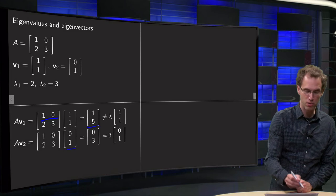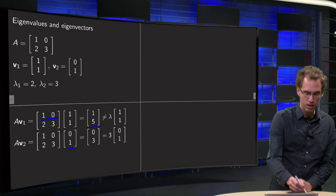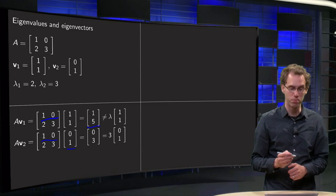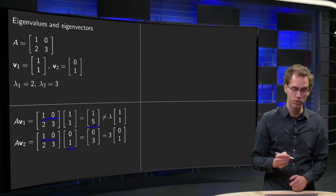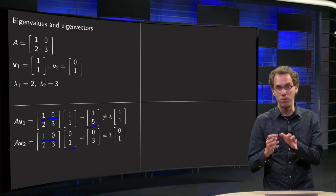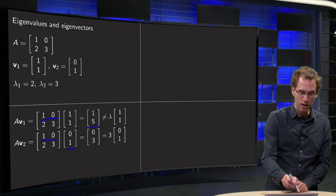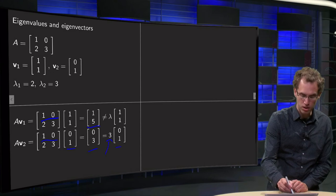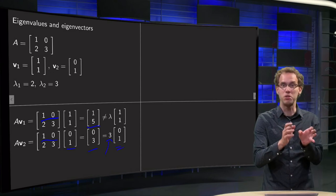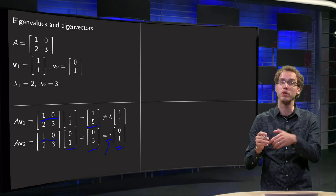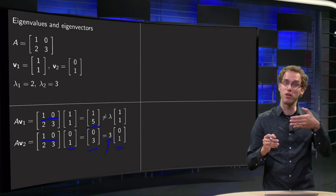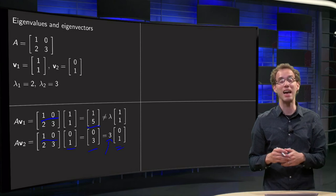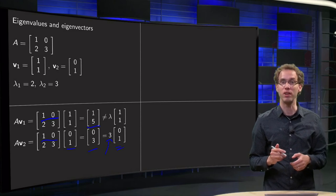What happens if we try [0; 1] instead? Then we get inner product 1, 0 with 0, 1 equals 0 and inner product 2, 3 with 0, 1 equals 3. So A times [0; 1] equals [0; 3]. And now we see [0; 3] equals 3 times [0; 1]. So A times [0; 1] equals 3 times [0; 1], which means that A times [0; 1] is a multiple of [0; 1], which means that [0; 1] is an eigenvector of the matrix A with an eigenvalue of 3.